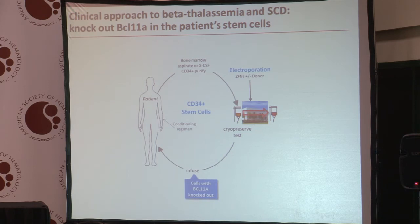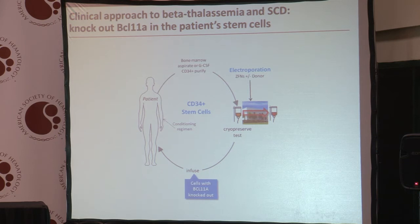So our approach to the clinic is to take a patient who doesn't have that BCL11A mutation and actually make it de novo. Take a patient's stem cells, get rid of the BCL11A gene in them, and then put the cells back into the patient and hope for a permanent lifetime elevation of fetal globin.